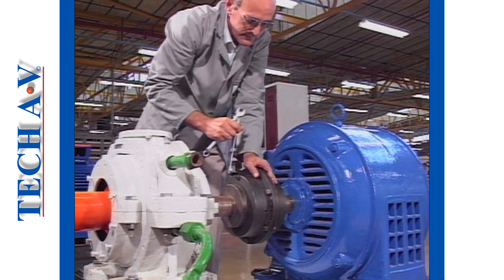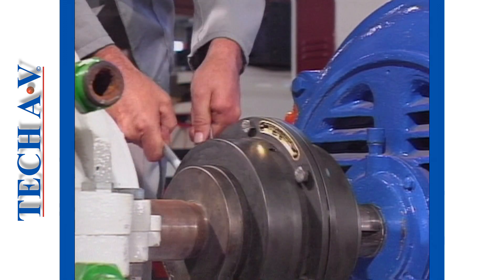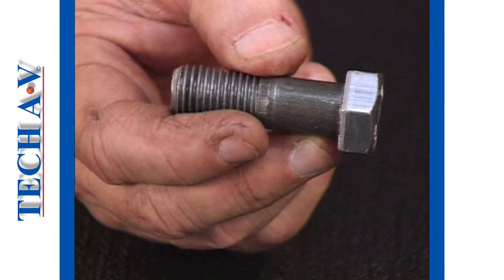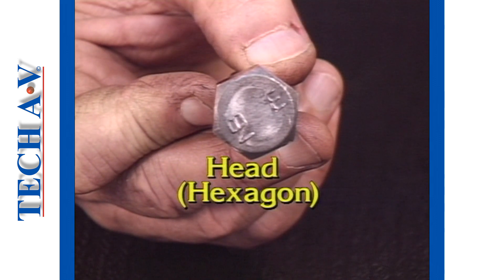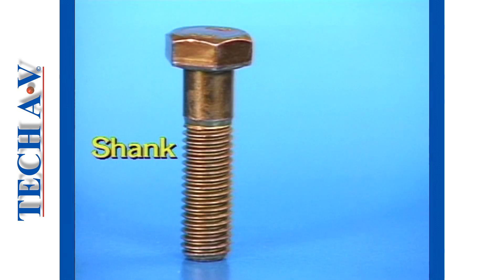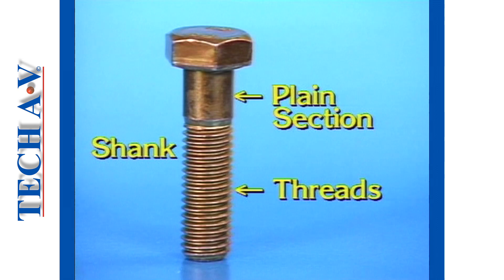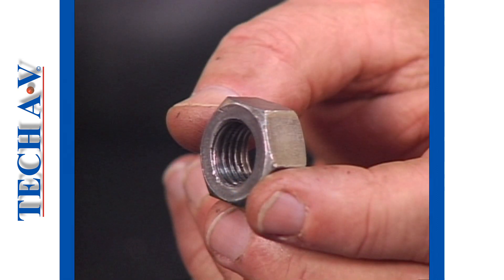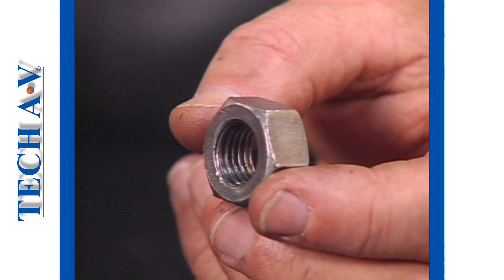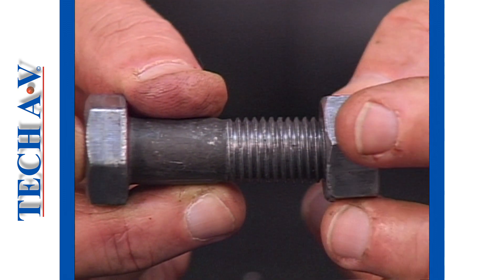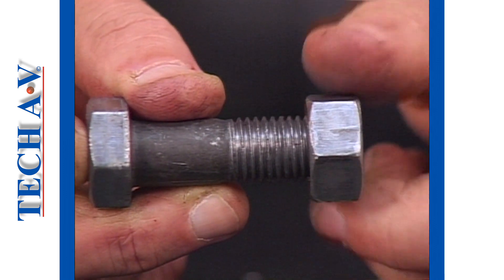Couplings between motors and driven assemblies often use bolts and nuts. A typical bolt consists of a head, which is usually shaped in this manner, which we call a hexagon — a six-sided shape. Below the head is the shank, which is a cylindrical shaped section. These are the threads, basically a spiral groove that has been cut into the shank. A bolt always has a non-threaded portion of shank known as the plain section.